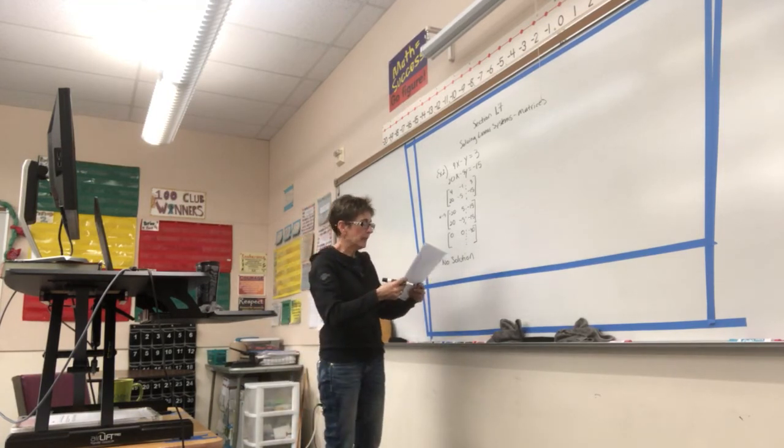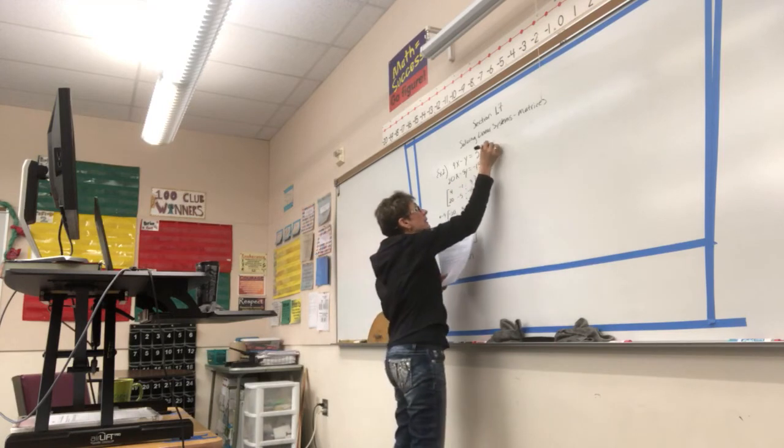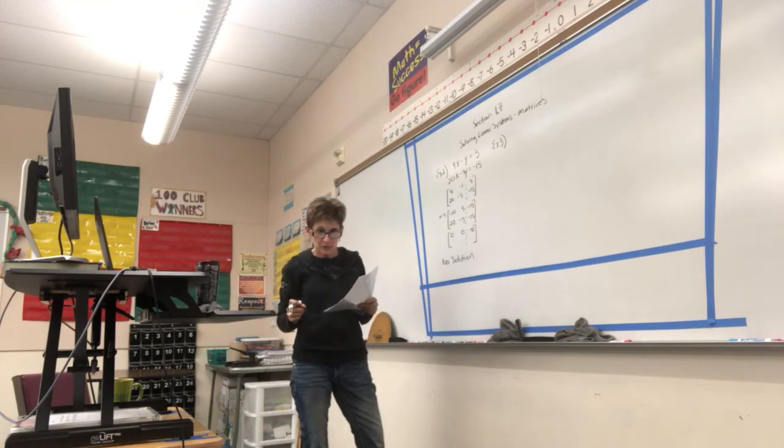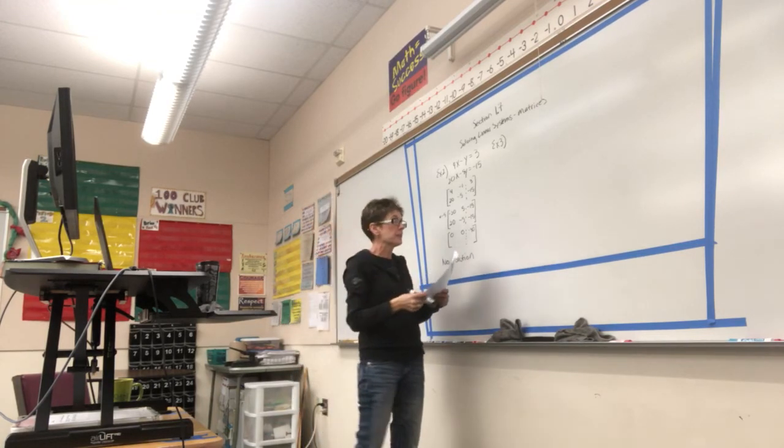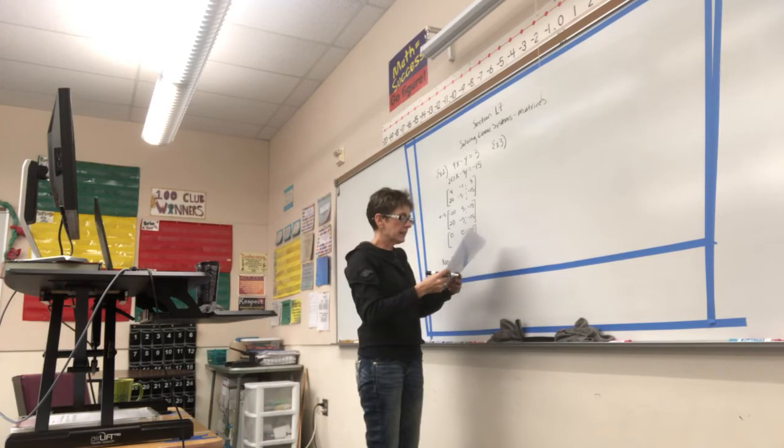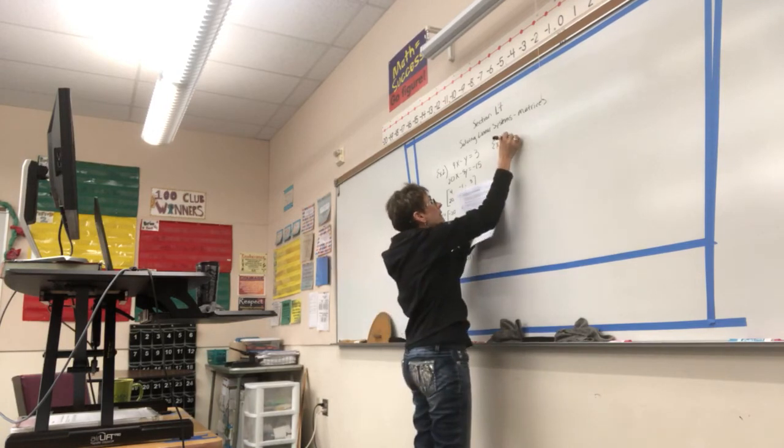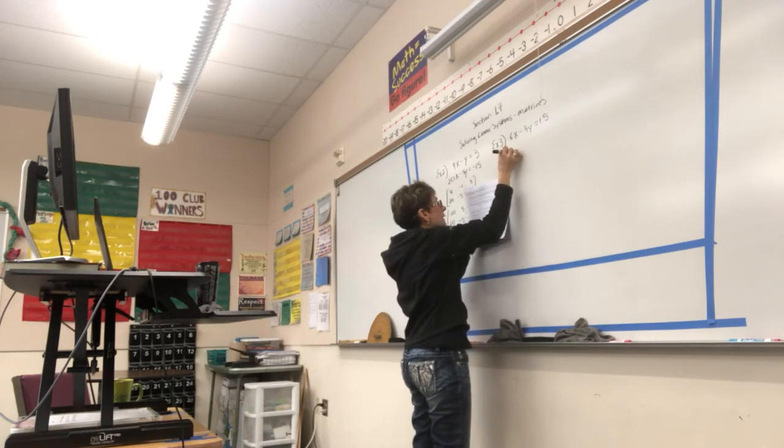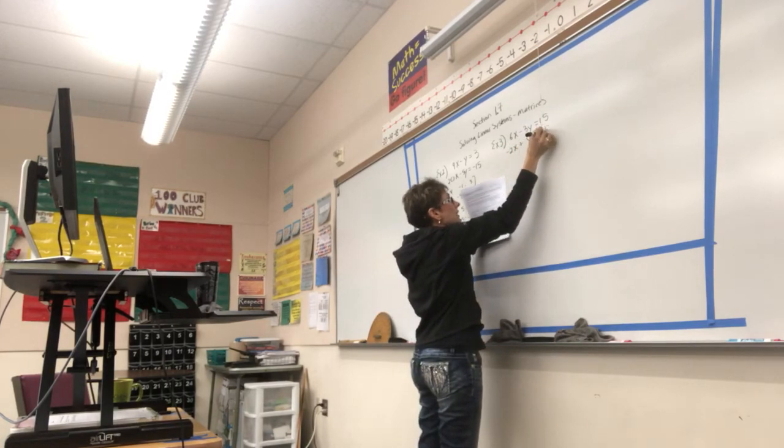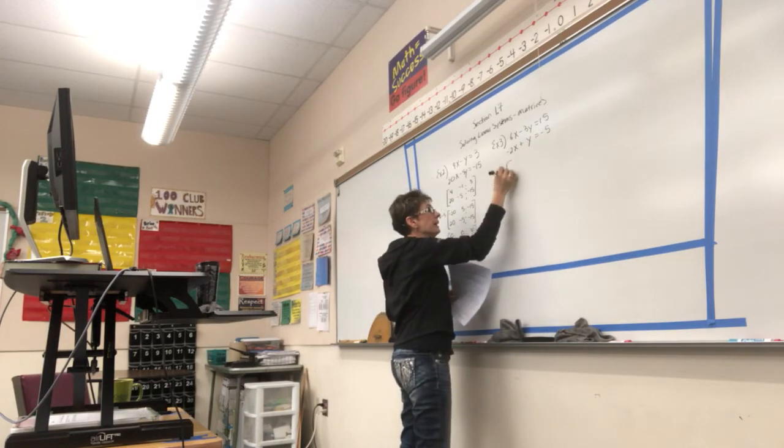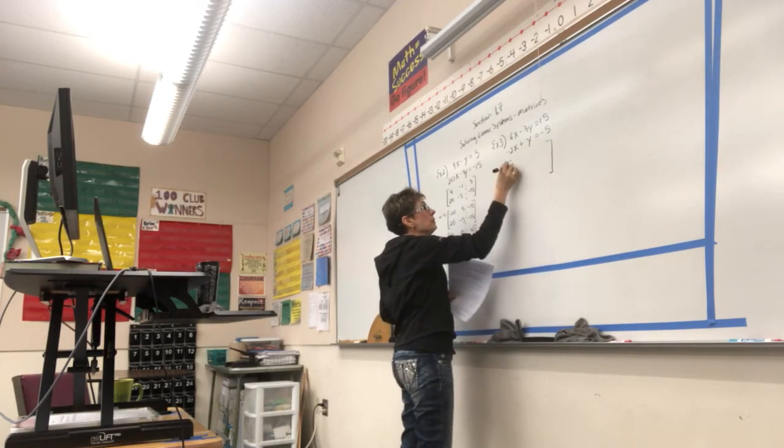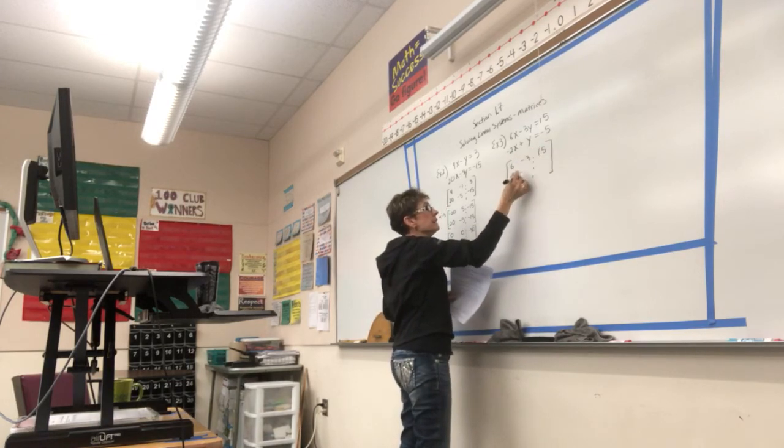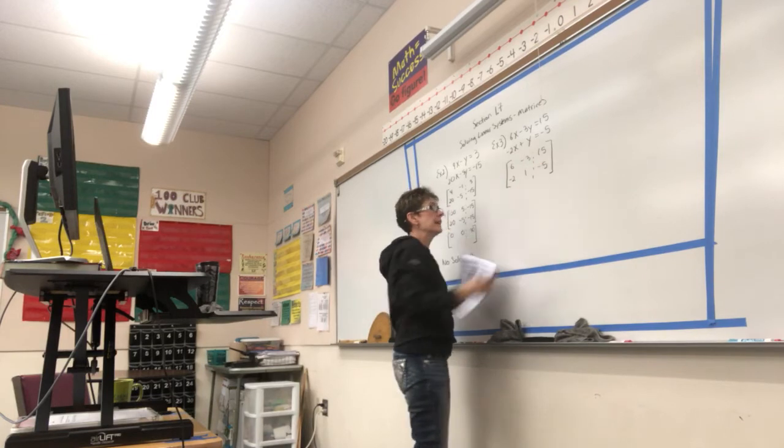Let's go ahead and look at example number 3. And this will be our last example on the video. We're going to do the calculator examples in class together, and I will put detailed directions in the stream. For example 3, I've got 6x minus 3y equals 15 and negative 2x plus y equals negative 5. Again, I want to put this in augmented matrix form. So, I'm going to have 6, negative 3, 15 and negative 2, 1, negative 5.